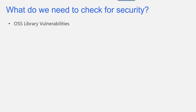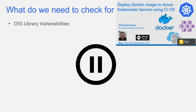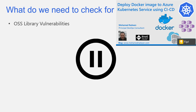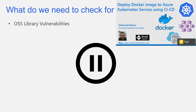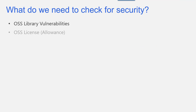So what do we need to check for security? First, we need to make sure that our source code does not have any vulnerabilities — the source code we write every day. We also need to check our open source software libraries for vulnerabilities, because we may have secure source code but insecure libraries.